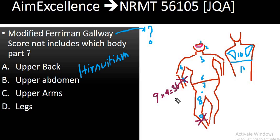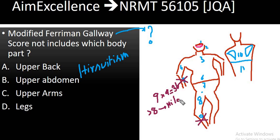This score is used to ascertain the degree or severity of hirsutism. If the score is greater than eight, it is classified as mild hirsutism according to the modified Ferryman-Galloway score. If the score is greater than fifteen, it is classified as moderate to severe hirsutism.